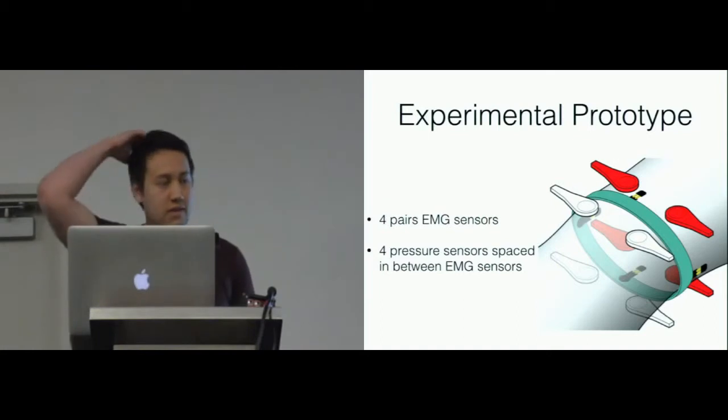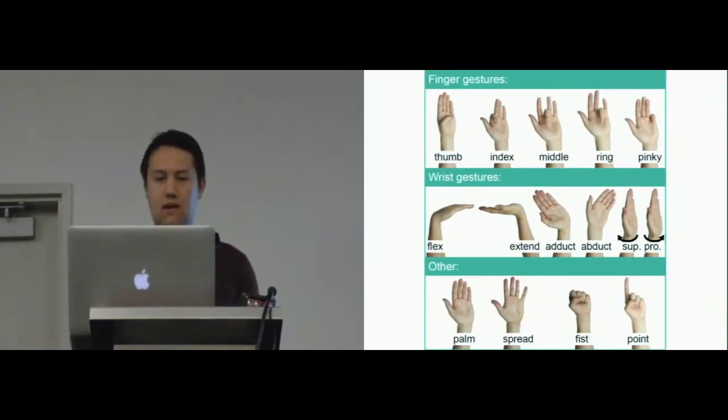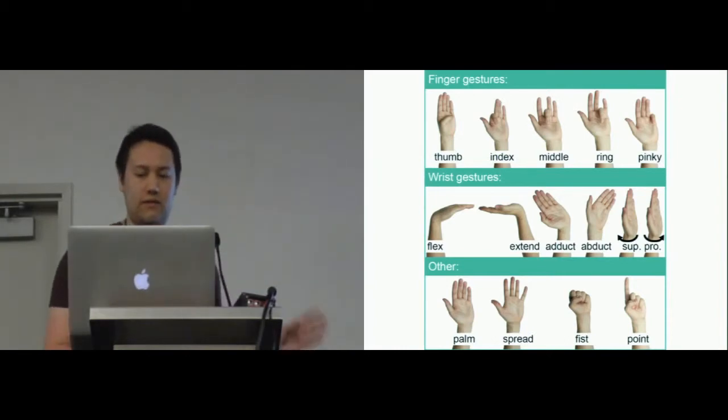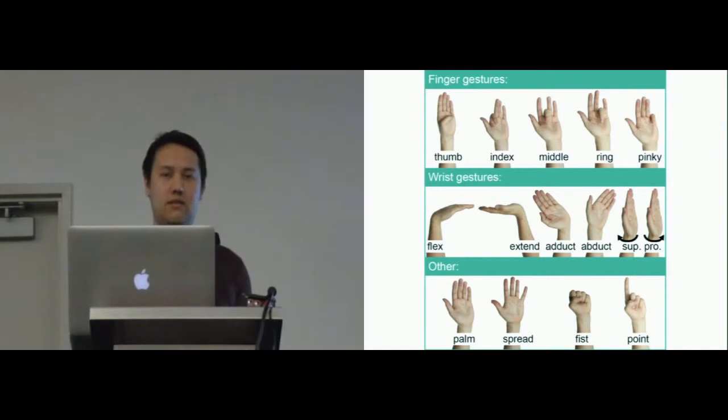In our main study, our experimental prototype had four pairs of EMG sensors, which is an extension of two more from the previous one, and four pressure sensors spaced evenly in between these EMG sensors. Our gesture set consisted of these fifteen gestures, consisting of both wrist gestures and finger movements, and we categorized these into three different subsets.